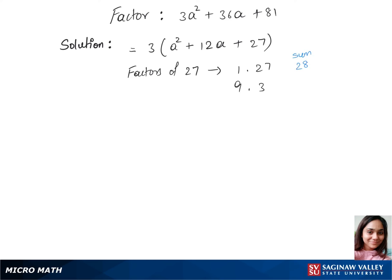The sum of each of these pairs are 28 and 12. The 12 matches up with our middle term's constant. We'll plug in 9 and 3 into our expression. So that's 3 times, inside the brackets, we have a plus 9 times a plus 3.